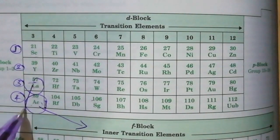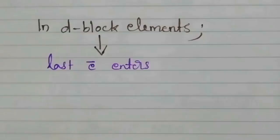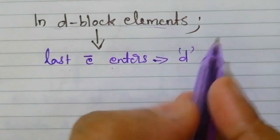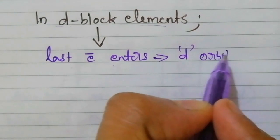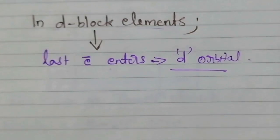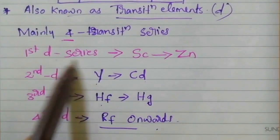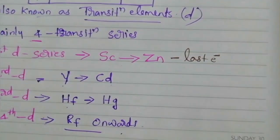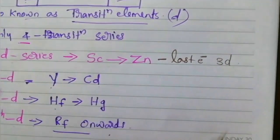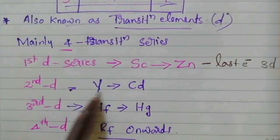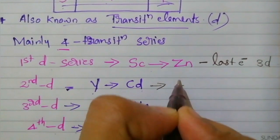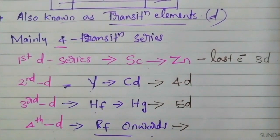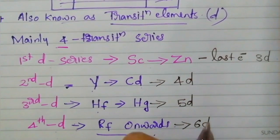We can study this contradiction in detail when we discuss F block elements. Now, D block elements — as studied in class 11, the last electron enters into the D orbital. So for the first D series, the last electron enters the 3D orbital; for the second D series, it moves to the 4D orbital; for the third transition series, it goes to the 5D orbital; and for the fourth series, it moves to the 6D orbital.